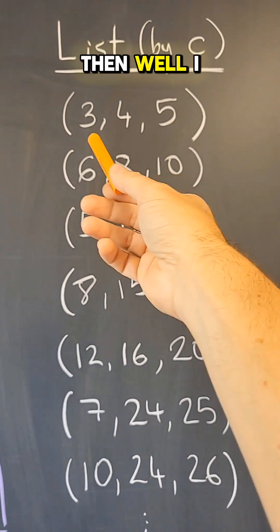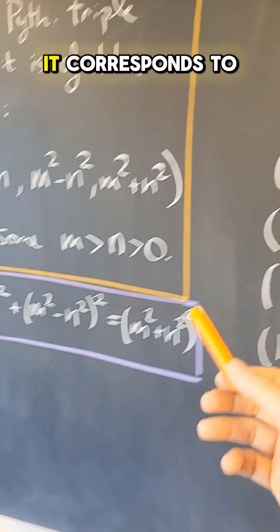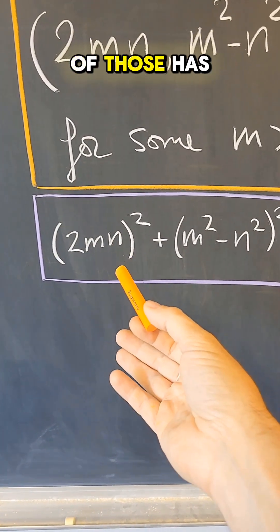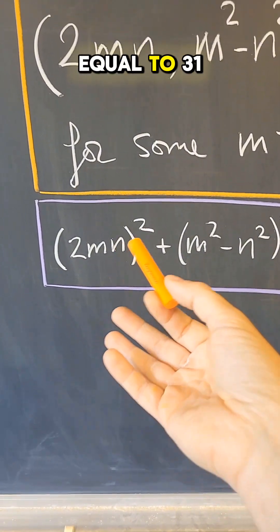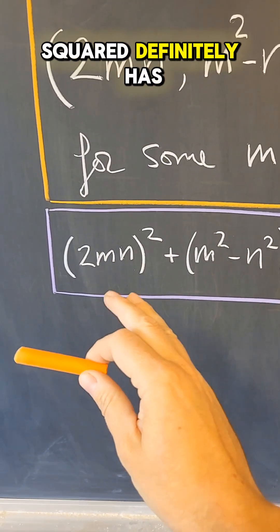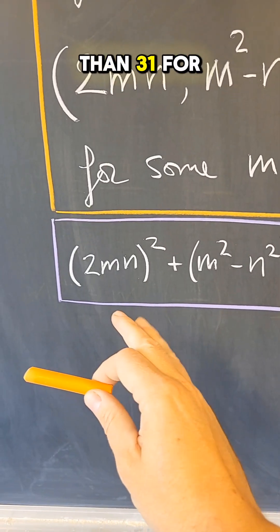Then I know that one of the two corresponds to this term, and each one of those has to be less or equal to 31. So 4m squared n squared definitely has to be less than 31 for it to work.